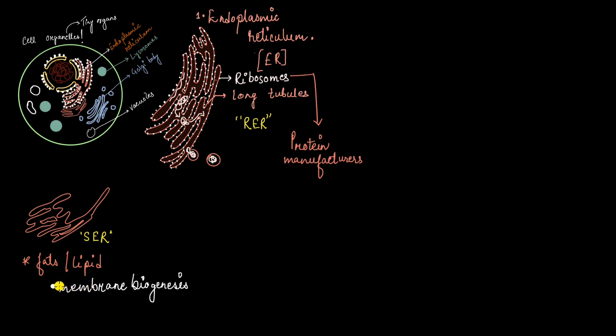And not just that, the smooth ER are also responsible for detoxification of drugs or poisons and this detoxification happens in the liver cells. So, the liver cells will have a lot of smooth ER in them. And these smooth ER, they biochemically change the toxins or the drugs into water soluble form so that it goes out of the body through urine. And that is how they detoxify the body. So, this was all about the endoplasmic reticulum, the rough and the smooth.